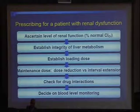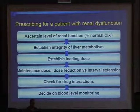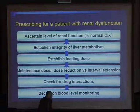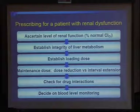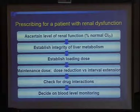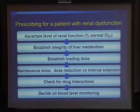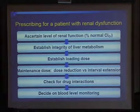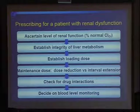If you want to prescribe a drug for a renal patient, there are steps to follow. First, ascertain the level of renal function in terms of renal clearance, then establish the integrity of liver metabolism as another route of elimination. Establish the loading dose, then establish the maintenance dose and consider the clearance. Check for drug-drug interactions, decide on blood level monitoring — because some drugs with a narrow therapeutic window will require monitoring. Finally, account for the amount of drug removed by dialysis by giving supplementary doses after dialysis, or in continuous therapy by augmenting the dose.